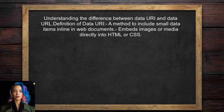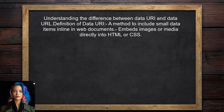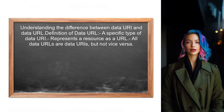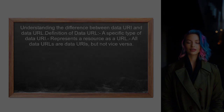To clarify the difference between data URI and data URL, we start with the definition of a data URI. A data URI is a way to include small data items inline in web documents — it allows you to embed images or other media directly into HTML or CSS. On the other hand, a data URL is a specific type of data URI used to represent a resource as a URL. This means that while all data URLs are data URIs, not all data URIs are data URLs. Think of data URLs as a subset of data URIs.